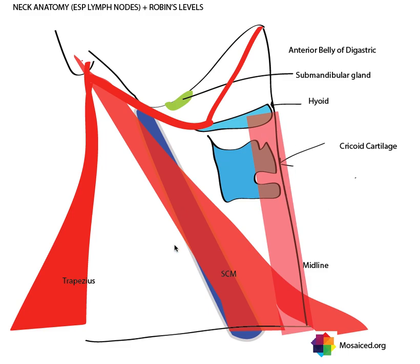What I've got here is a diagram of the neck, and the main two things you need to know to immediately recall this are the most important borders: the inferior border of the cricoid cartilage and the inferior border of the hyoid. These are essential in helping you subdivide the seven different Robbins levels of the neck.